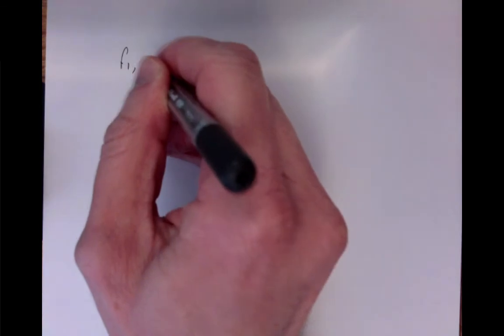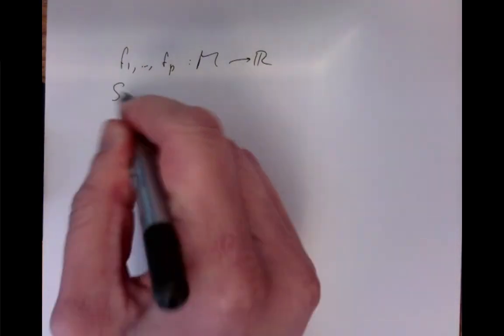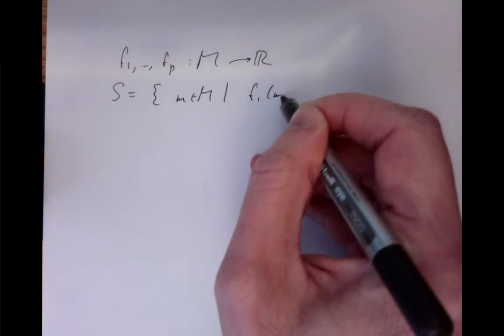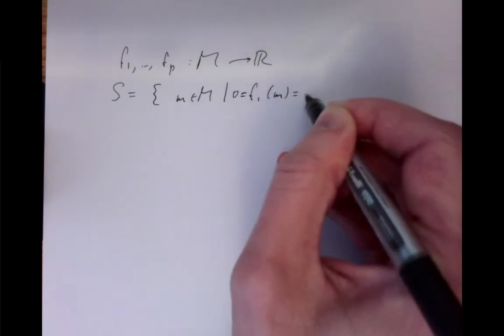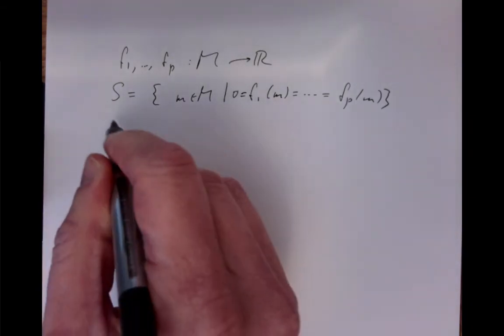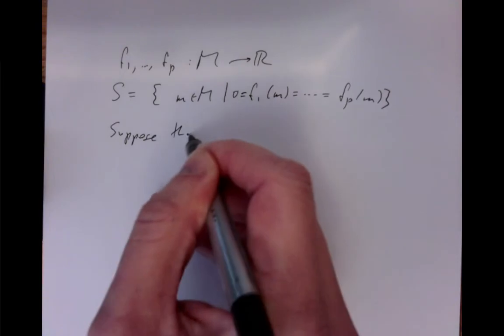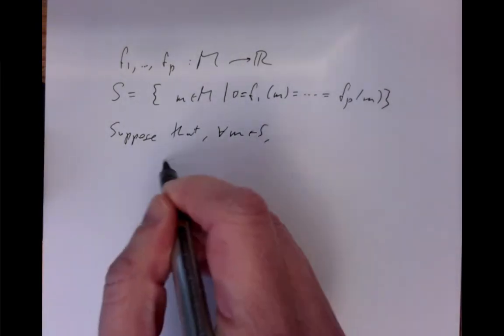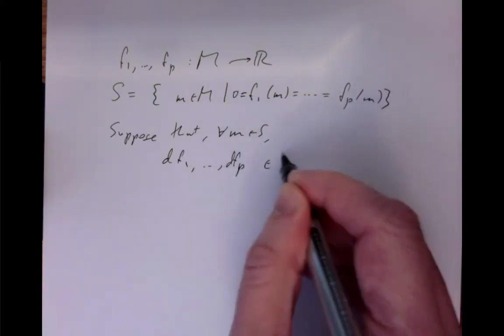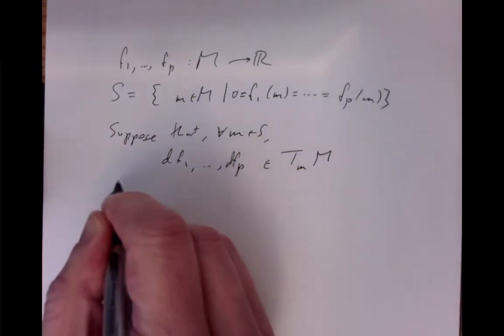Let's start off by trying to put the implicit function theorem into the language of differentials. Suppose that we have functions f1, ..., fp on a manifold — smooth functions. Let S be the set of points of the manifold at which all of them vanish. Suppose that for every point in that set, the differentials of the functions at that point in the tangent space at that point to our manifold are linearly independent.